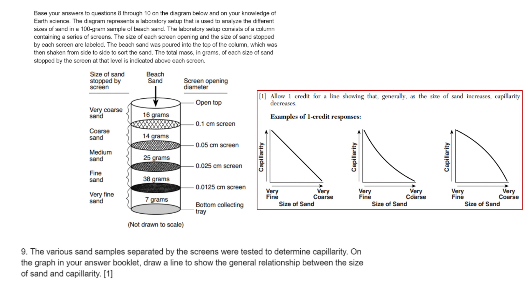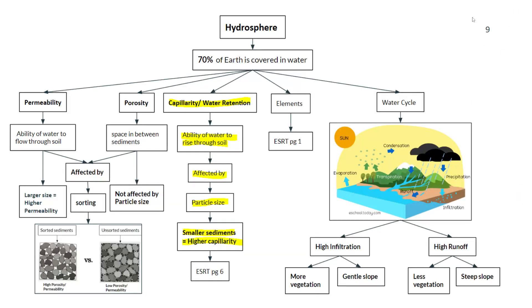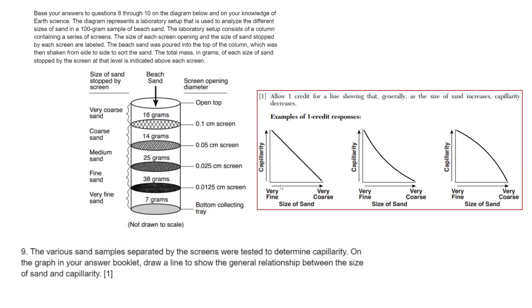Remember, if you go to your Regents Review Packet page 9, capillarity or water retention is the ability of water to rise through soil and it's affected by particle size. The smaller your sediments, the higher your capillarity will be. So if you have very small grains of sand and some water, that sand will lift up the water because it's smaller compared to larger grains of sand. That's why as your sand size is getting more large or coarse, your capillarity is decreasing. The finer your sand, the smaller your sediments, the higher your capillarity.